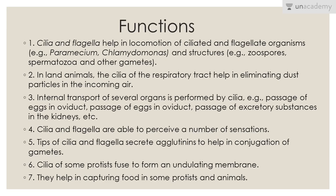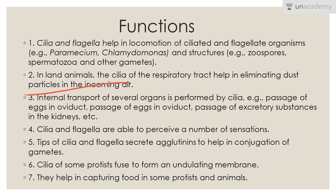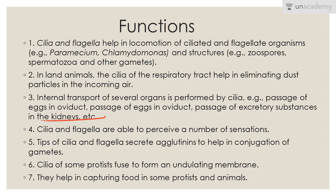Cilia and flagella help in locomotion of ciliated and flagellated organisms — examples include Paramecium, Chlamydomonas, zoospores, spermatozoa, and other gametes. In land animals, cilia of the respiratory tract help in eliminating dust particles from incoming air. Internal transport in several organs is also performed by cilia — for example, passage of eggs in the oviduct and passage of excretory substances in the kidneys. Cilia and flagella are also able to perceive a number of sensations, and their tips secrete agglutinants to help in conjugation of gametes.